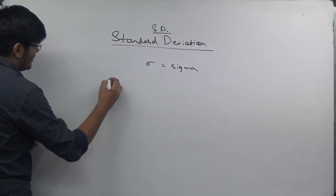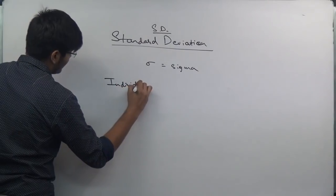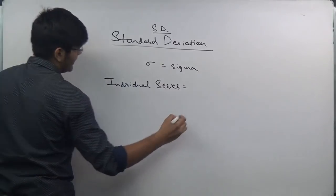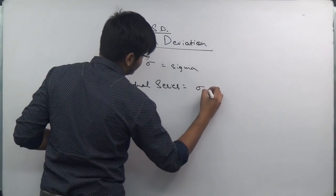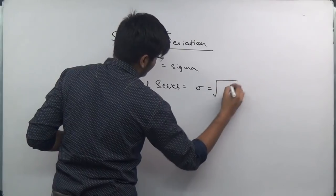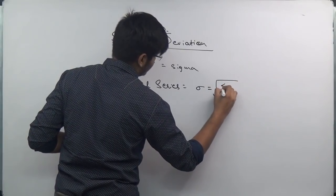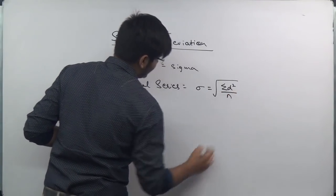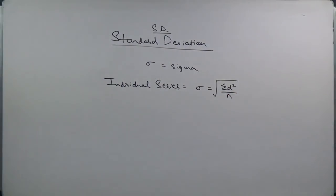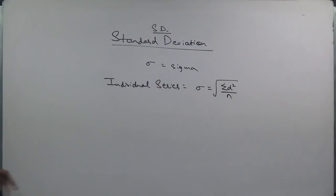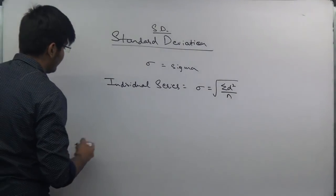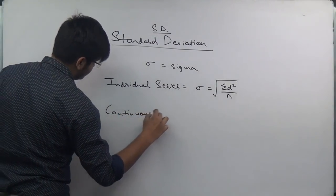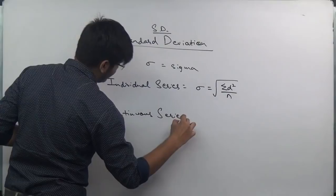The first formula, applicable for individual series, is: Standard Deviation = √(Σd² / n). The second formula is for continuous series, also called the grouped method: Standard Deviation = √(Σfd² / N − (Σfd / N)²). Note that the whole square and the individual square mean different things in this formula.